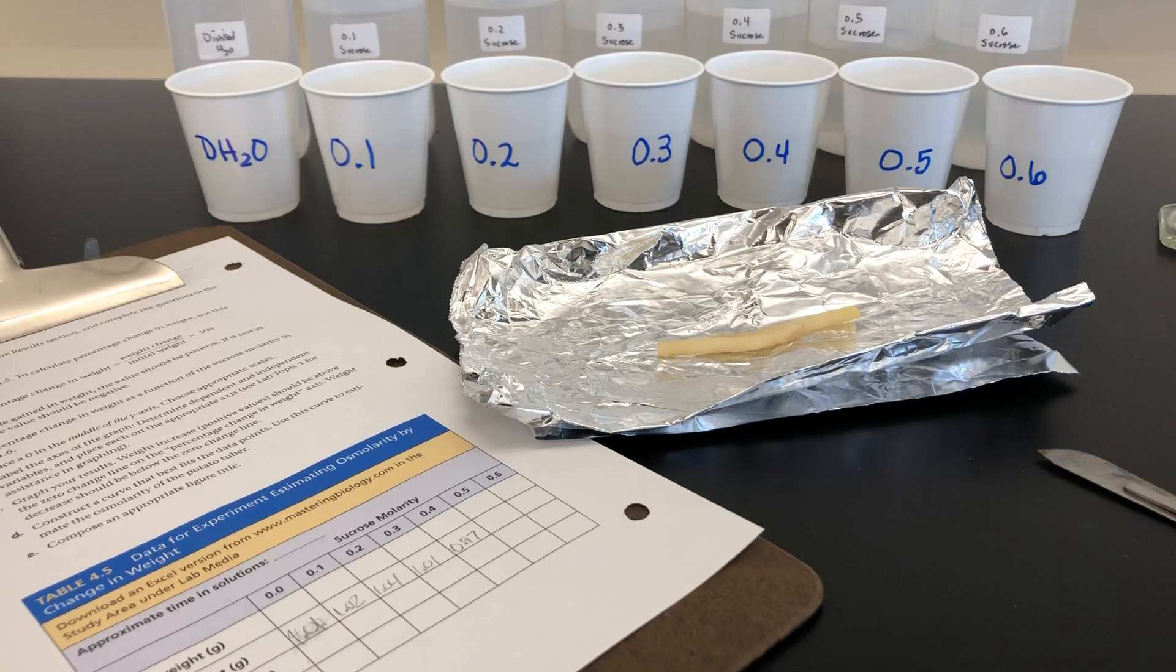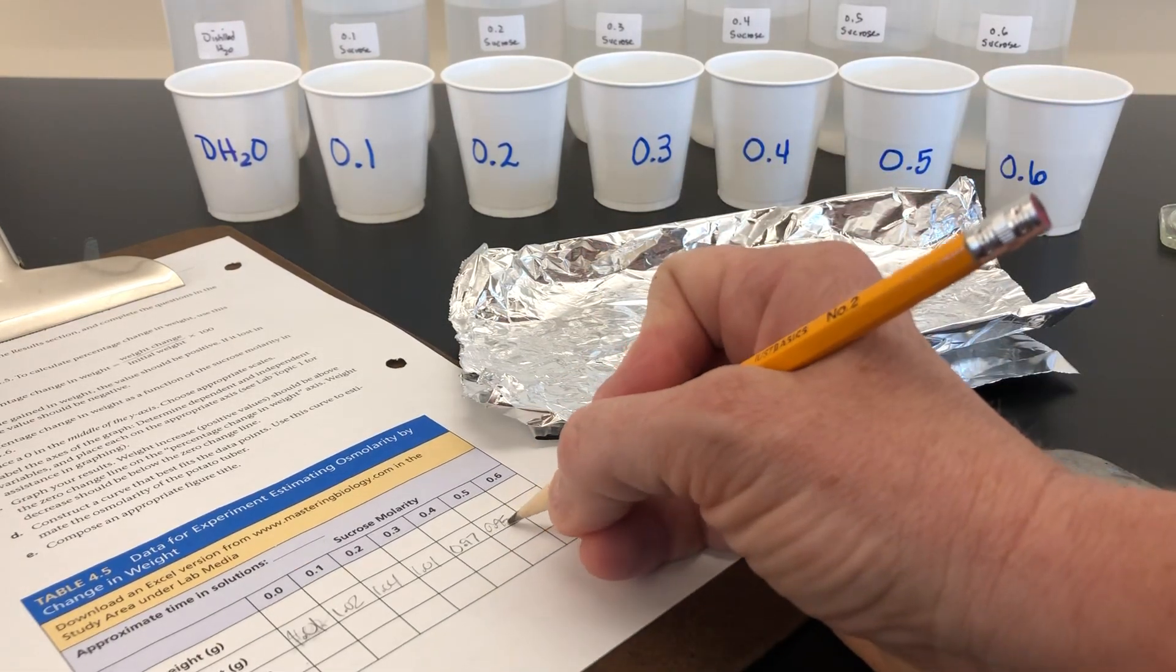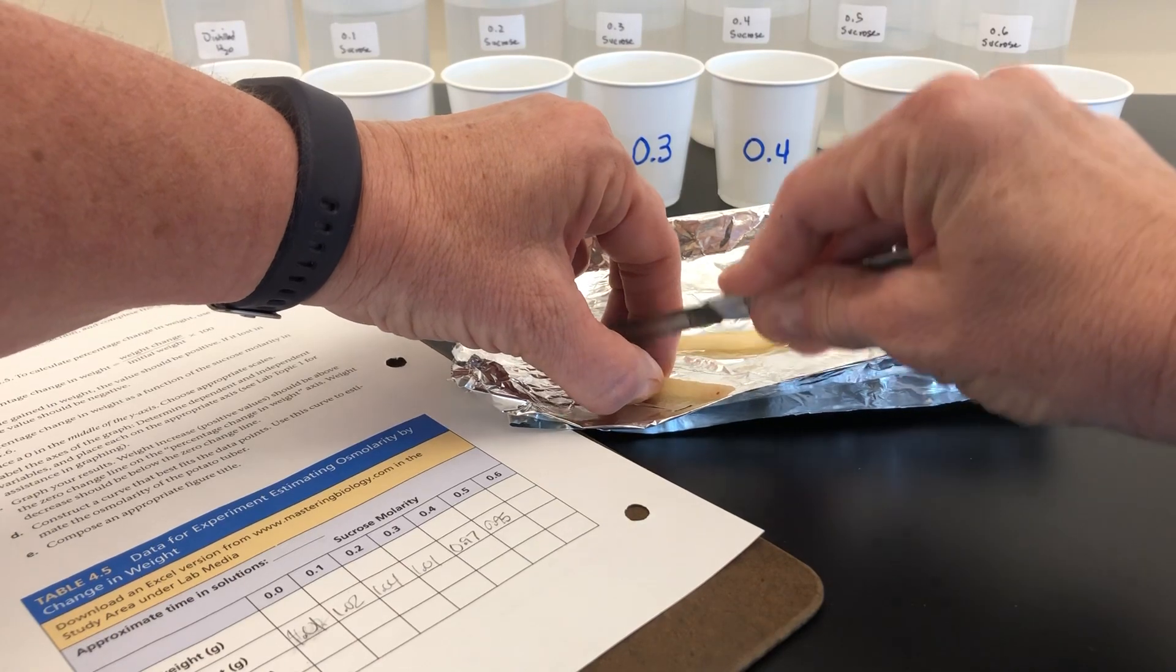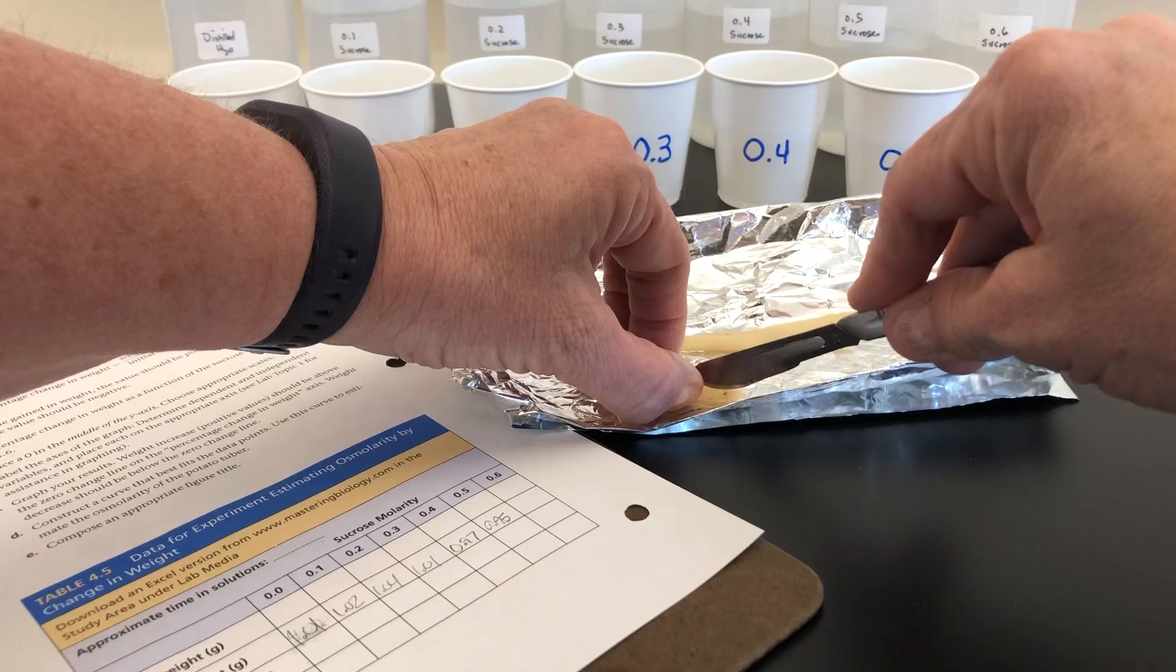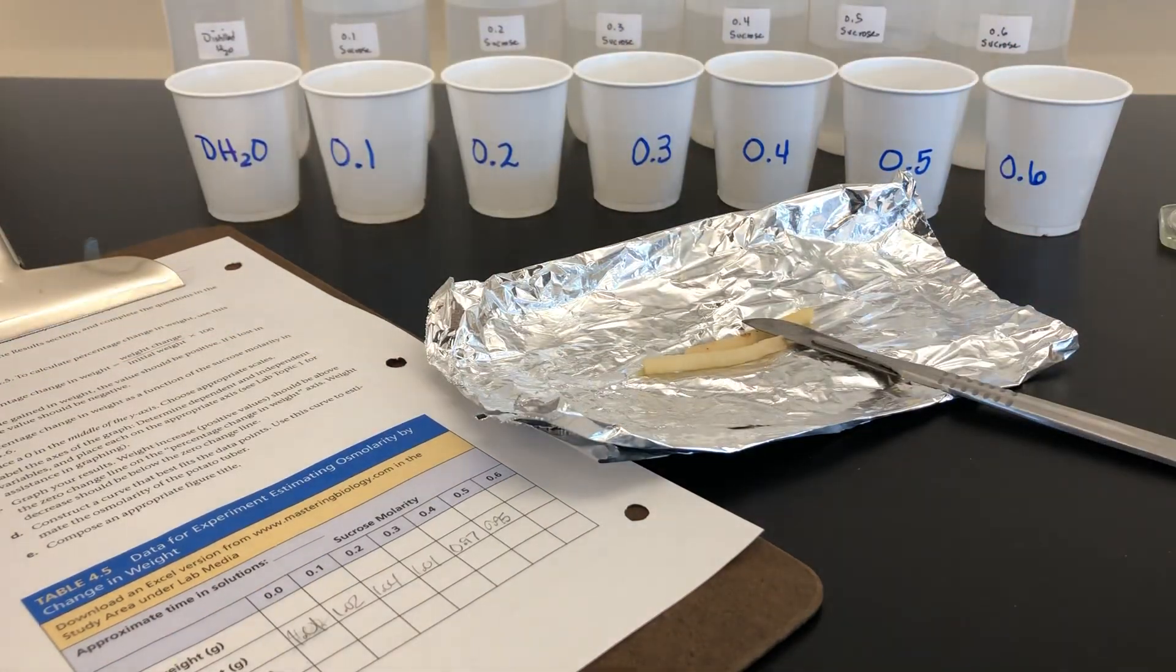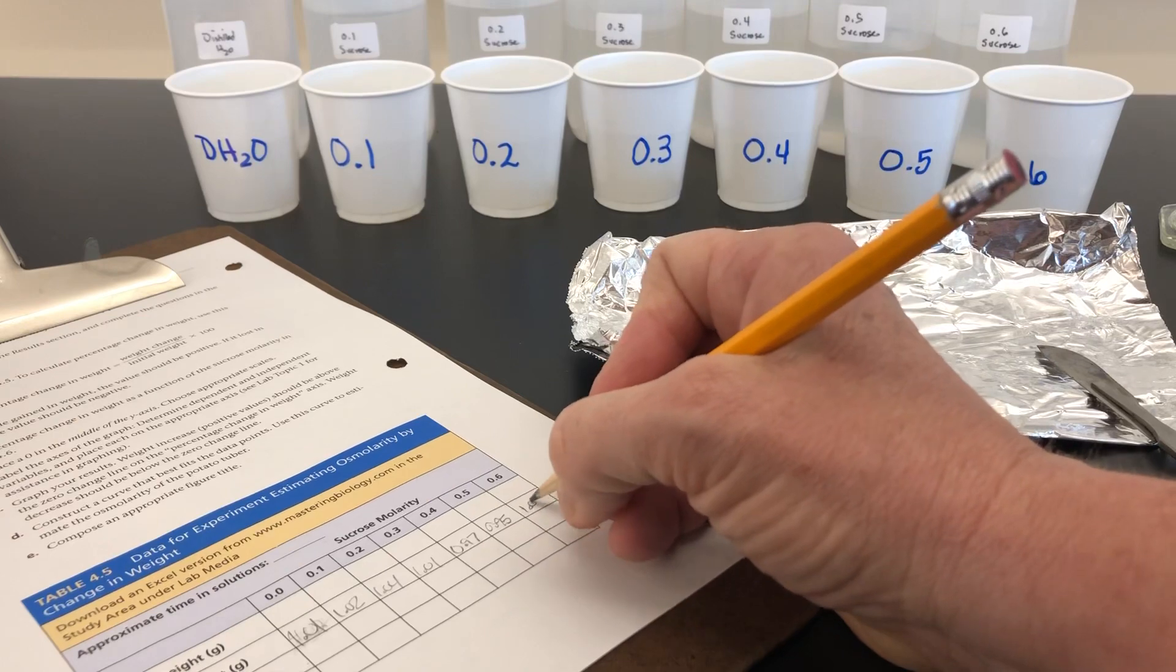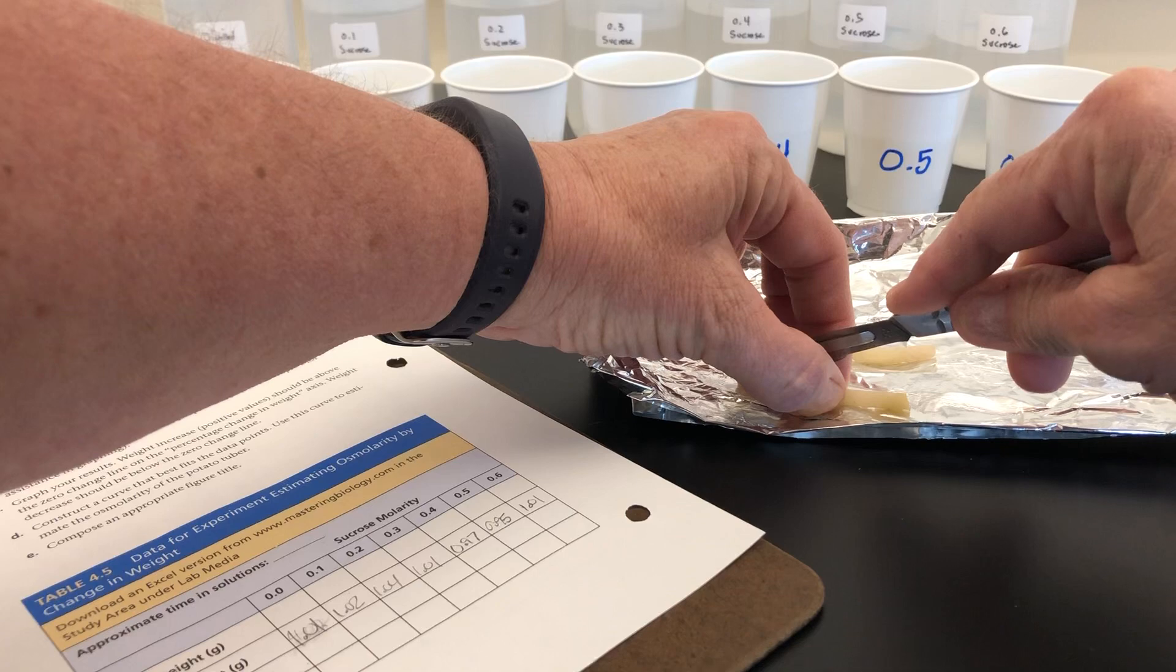The 0.5 solution is going to have a potato weighing 0.95, and lastly, 1.01 will be placed in the 0.6 solution.